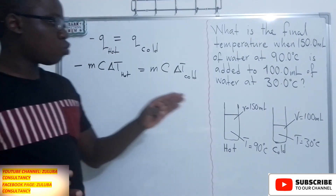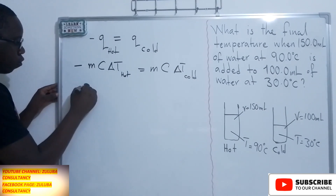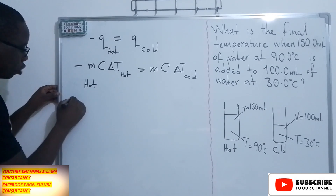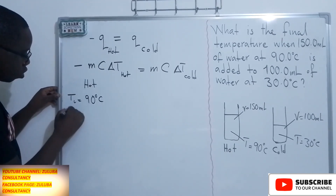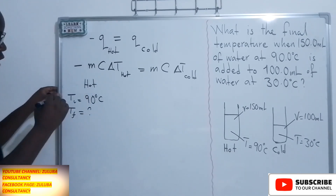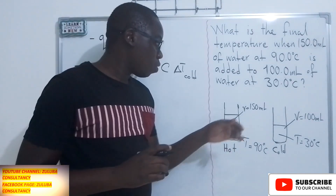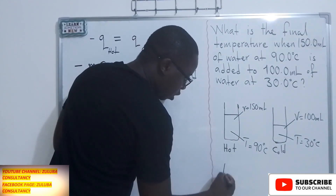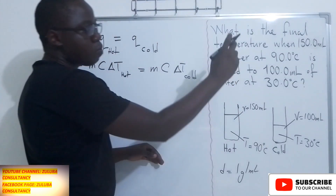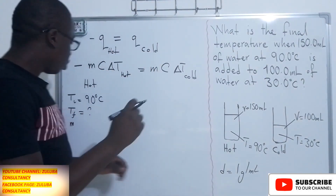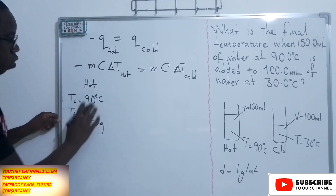Now let's use the information we have in this equation. For the hot water, the initial temperature is 90 degrees Celsius, and we need the mass. The mass comes from the volume we have been given. Remember, the density of water is 1 gram per milliliter, so we multiply the volume by the density to get the mass: 1 times 150 gives us 150 grams.